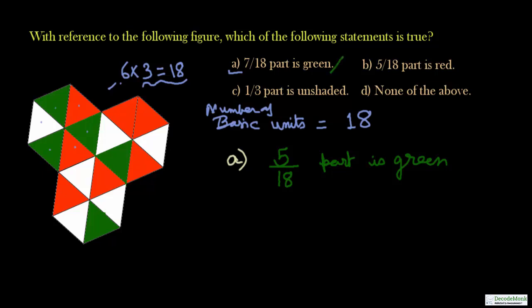Now let us check the second option which is option b says five by 18 part is red. So let us count the number of red triangles: one, two, three, four, five, six, seven. So there are seven out of 18, so 7 by 18 part is red. So statement b is also incorrect because the right answer will be 7 by 18 part should be red. Now coming to the third option which says